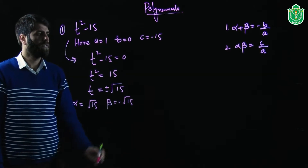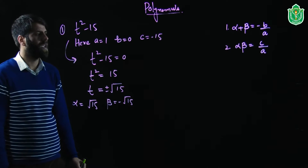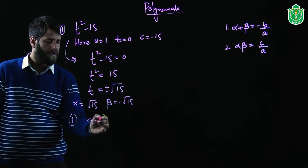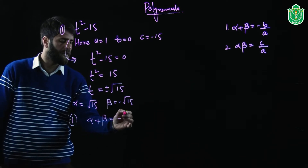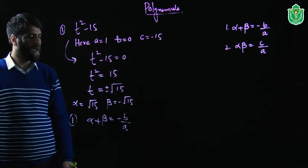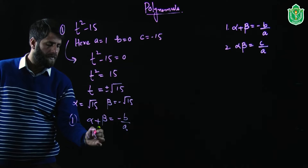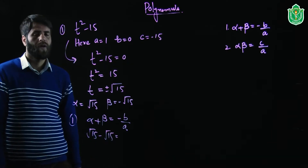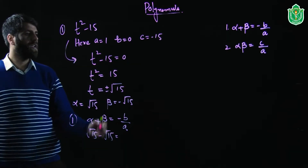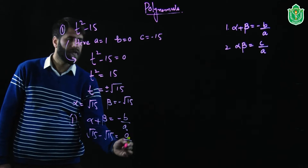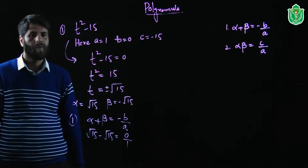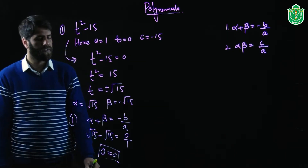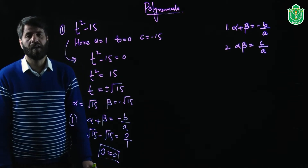The first relationship is alpha plus beta equals minus b divided by a. Alpha is root 15 and beta is minus root 15, so alpha plus beta equals root 15 minus root 15 equals 0. And minus b divided by a is minus 0 divided by 1, which is also 0. So 0 equals 0 — the first relationship is verified.